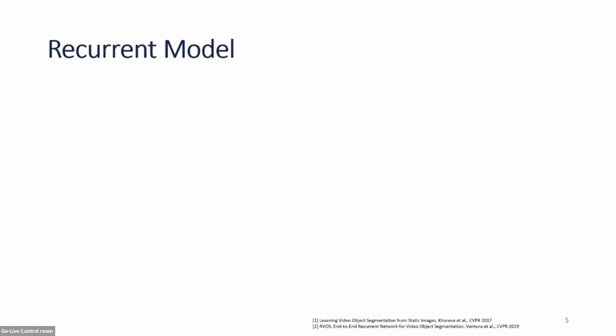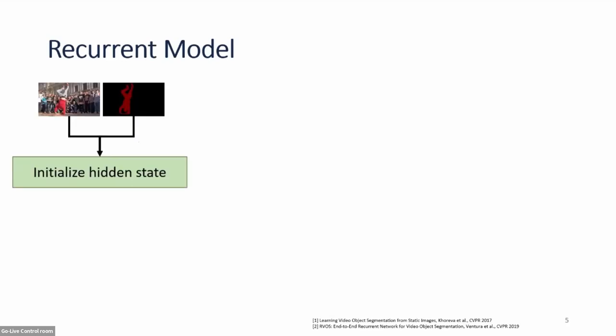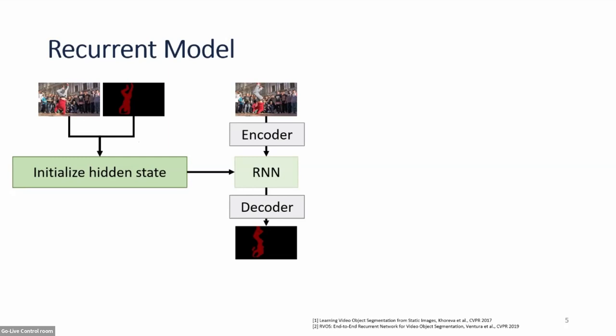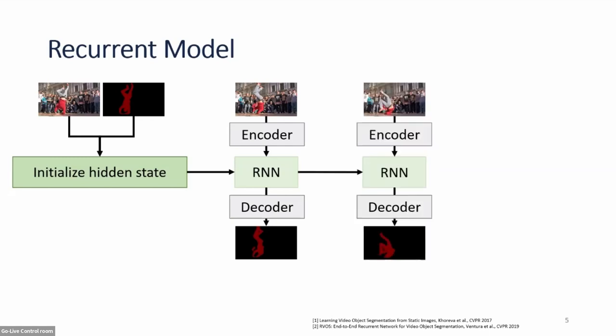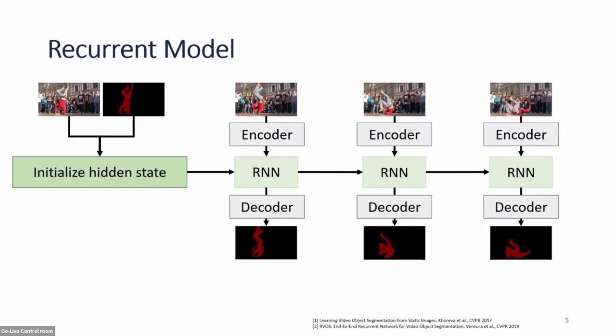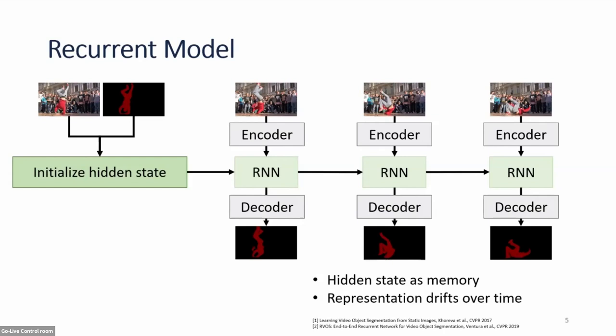One paradigm of prior works is the recurrent model, which initializes a hidden state using the input image and mask, then for any new key frame uses an encoder-decoder structure with an RNN — such as an LSTM or GRU. The RNN takes the hidden state as input and produces a representation for the decoder to segment the object, and also produces a new hidden state for the next frame. However, the hidden state is updated every single frame, so its representation will start to drift, and we encounter classical RNN problems such as vanishing gradient.